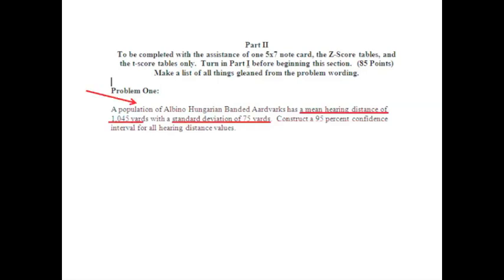The very first thing you should home in on is that this is a confidence interval problem. So we're going to construct a confidence interval, and therefore we would go to our confidence interval thinking map to determine what type of problem we have. Well, if we read the problem, it tells us that we have a population of albino-Hungarian banded aardvarks, a mean hearing distance, and a standard deviation given to us. Therefore, we know that this is a population confidence interval, and we know mu and we know sigma.